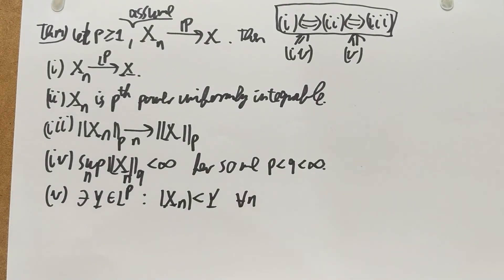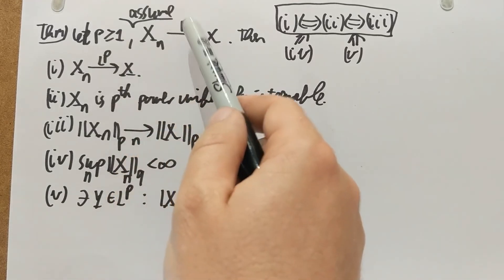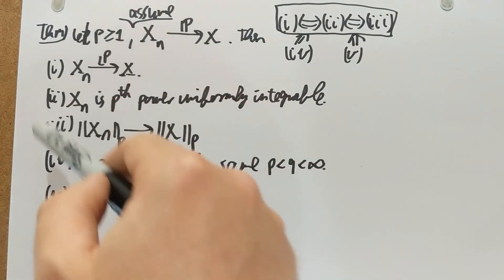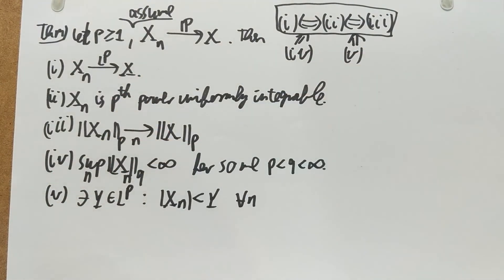Now, before we have seen a theorem about various modes of convergence, and that theorem told us that almost sure implied in probability, which implied weak. And lp also implied in probability, which implied weak. So in particular, lp implied in probability. This thing here is about going backwards.